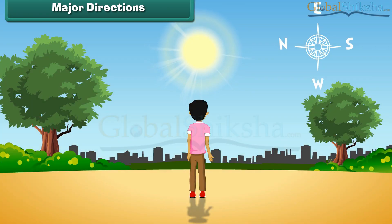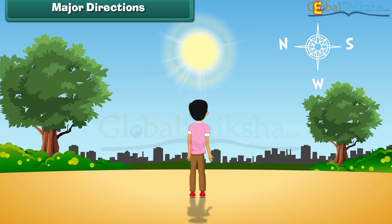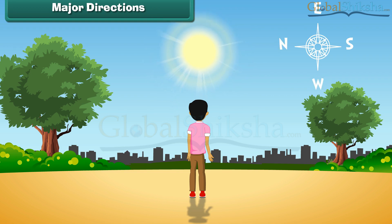This is J. He is standing facing the sun. The sun rises in the east. Therefore, east is in front of him. It means west is behind him, north is to his left, and south is to his right.